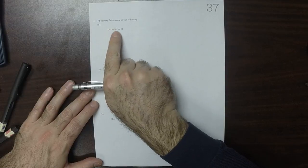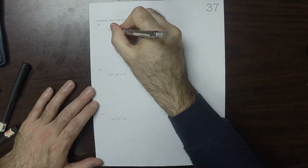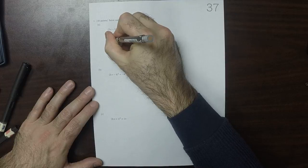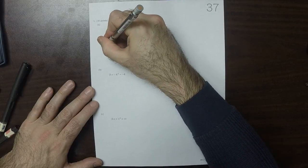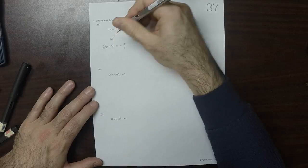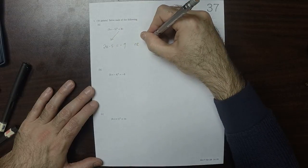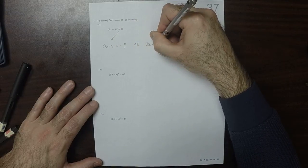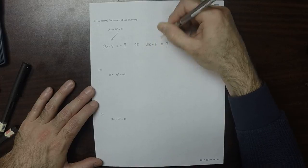For this one, I can see that we're squaring something to become 81. So there's two possibilities: 2x minus 5 must be negative 9, or 2x minus 5 must be positive 9.